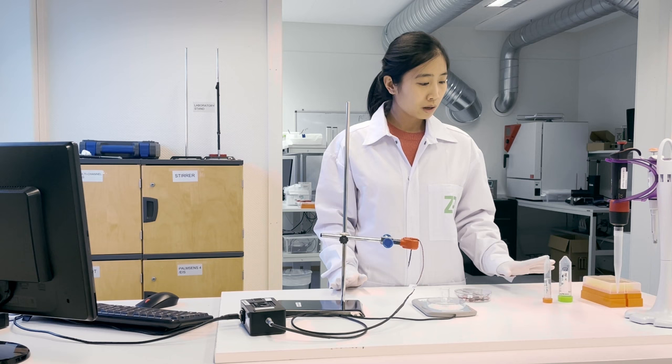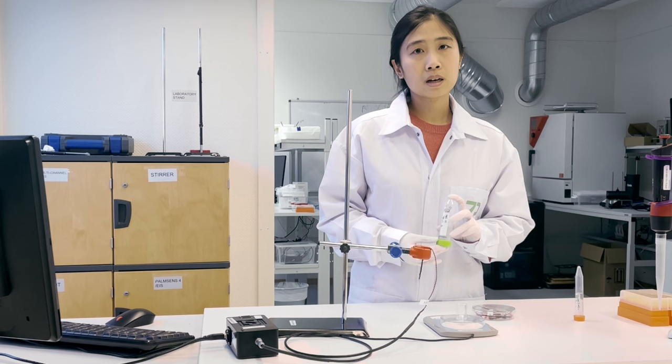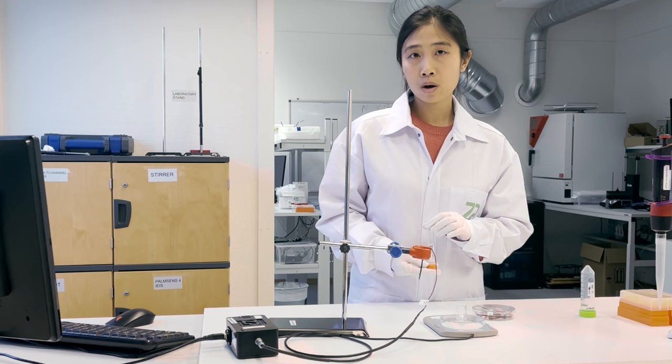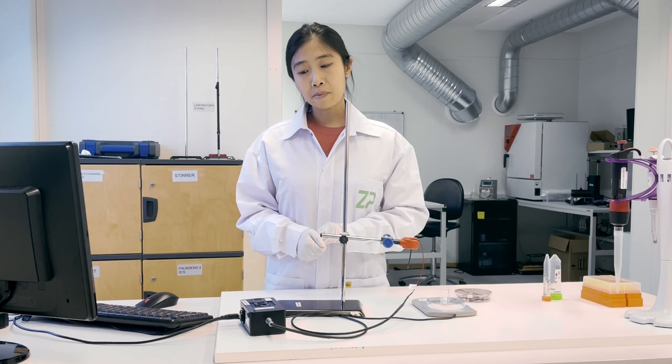Before we start our work, we need to make sure all our setups are ready and all our solutions are well prepared. First of all, we need to have our PBS that doesn't contain any glucose as our blank. And also we need to prepare one molar of glucose solution so that we can spike into this PBS to have a staircase performance in the chronoamperometry.